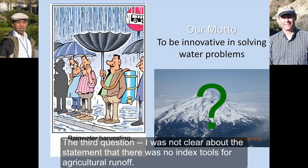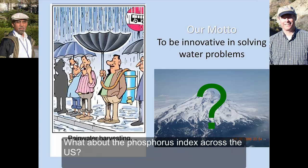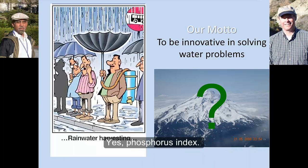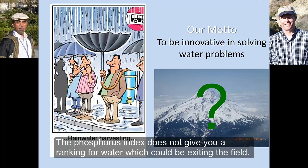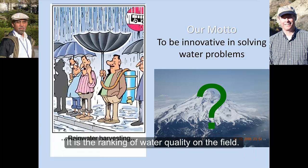Third question: it was not clear about the statement that there were no index tools for agricultural runoff. What about the phosphorus index used across the U.S.? The phosphorus index gives you a sort of water quality ranking, but the phosphorus index does not give you a ranking for water which might be exiting from the field. So it's a ranking of water quality which exits from the field rather than giving what's happening in the field.